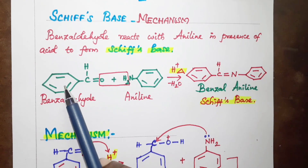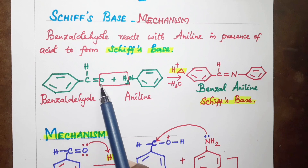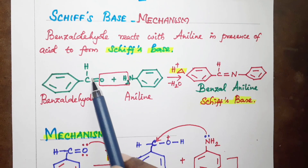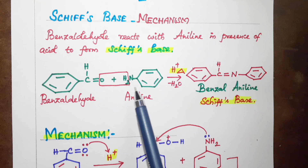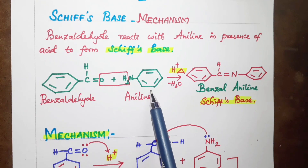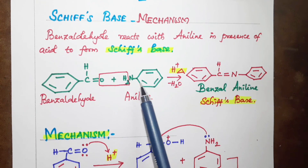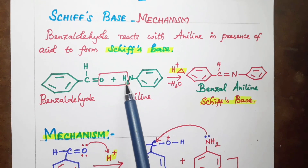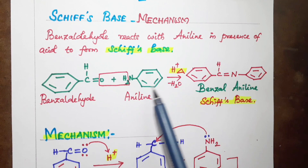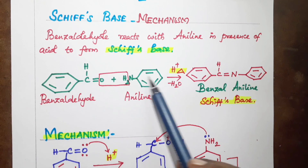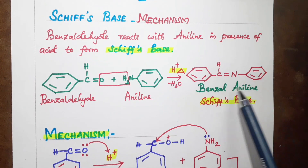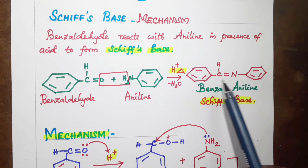Benzaldehyde has the formula C6H5-CHO, with a C double bond O group. Aniline has the formula C6H5-NH2. The oxygen of benzaldehyde carries a lone pair of electrons below the carbonyl group.